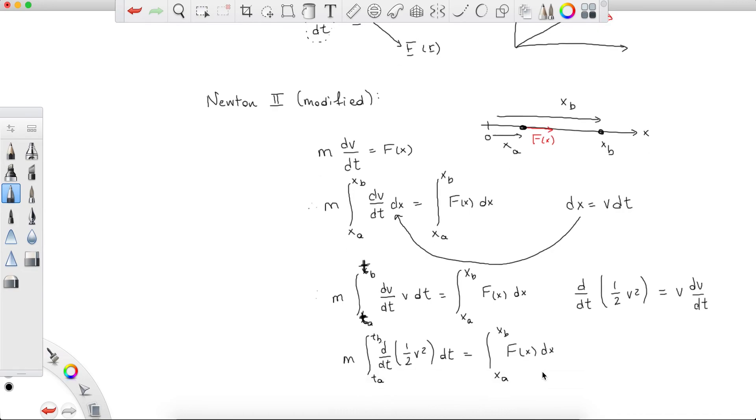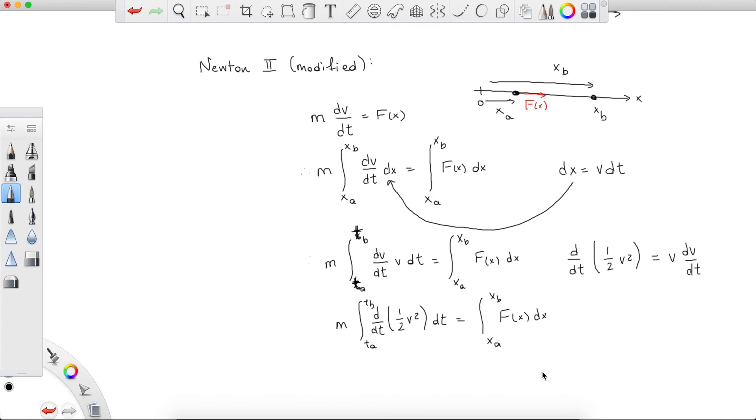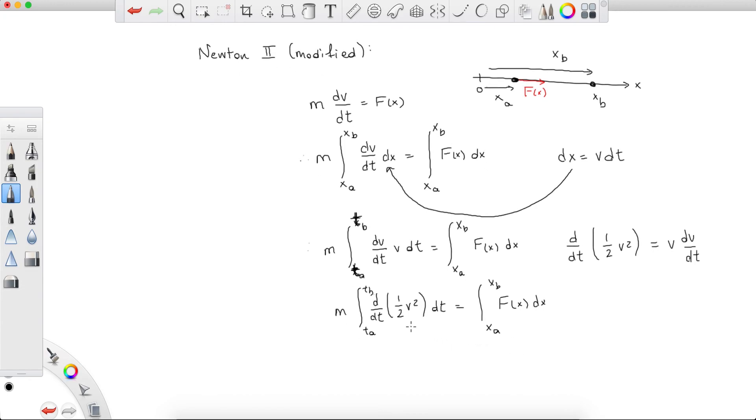And now we can use the fundamental theorem of calculus, and we finally get: well, what's the integral of a derivative of something with respect to time? Well, it's just that something evaluated at tb and ta. So we finally get one half m the velocity squared at time tb, which is simply the velocity b squared. So I'll just note vb is just the velocity at time tb, or the velocity at position xb, they are the same thing. So minus one half m va squared.